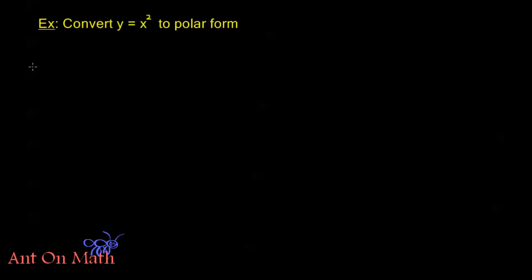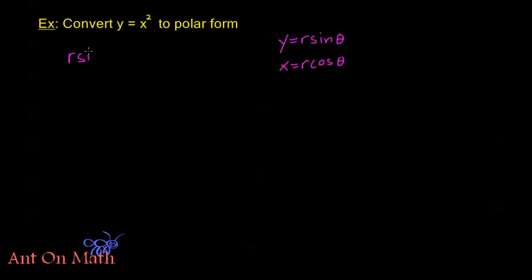So let's say we want to convert y equals x squared, this rectangular equation, to polar form. The way that we do this is we're still going to use the same relationships from the last video. I know that y is equal to r sine theta and x is equal to r cosine theta. So I can simply substitute these into the equation: y equals x squared becomes r sine theta equals r cosine theta, all squared.